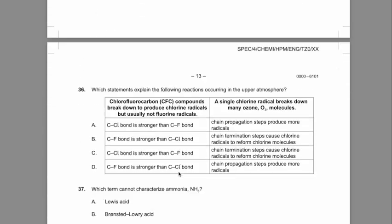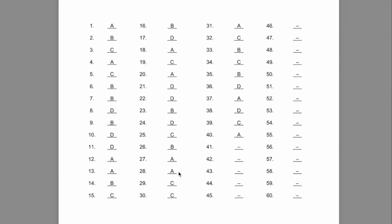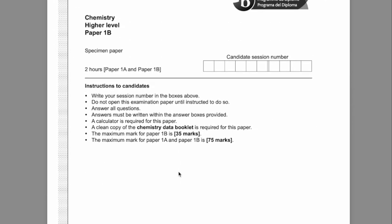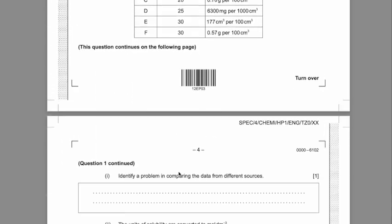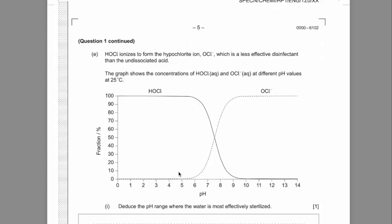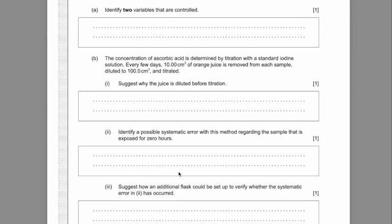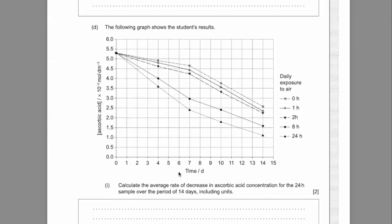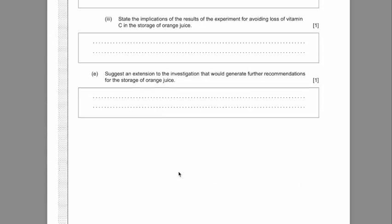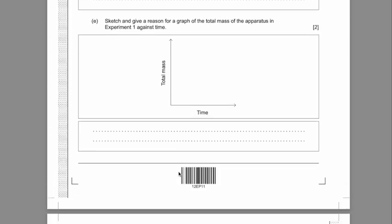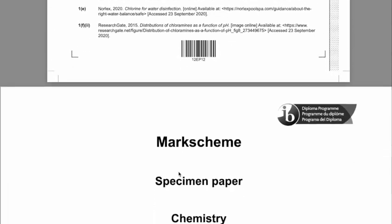Here are the 40 multiple choice questions and here are the answers. Here is a sample of your paper 1B, which is experimental-based and data-based questions still connected to the core of chemistry, very much connecting also to graphs and the tools study — the practical skills acquired. And here is the mark scheme.